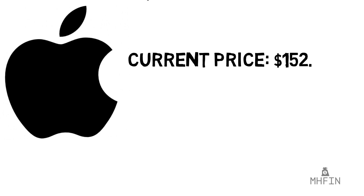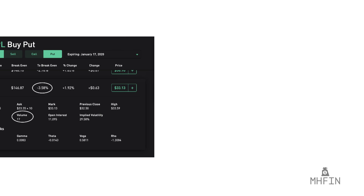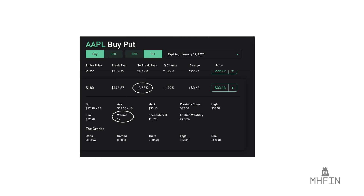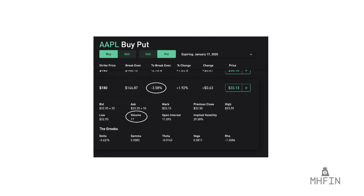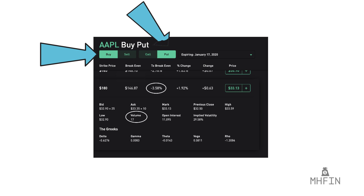Let's look into an example using Apple, which is currently selling for $152.33 per share. If we go on the Robinhood app and navigate to the Apple options page, we are met with a dizzying array of buttons. We want to make sure we have selected the buy tab, then the put tab, and finally select an expiration date, which in our example is January 17, 2020.